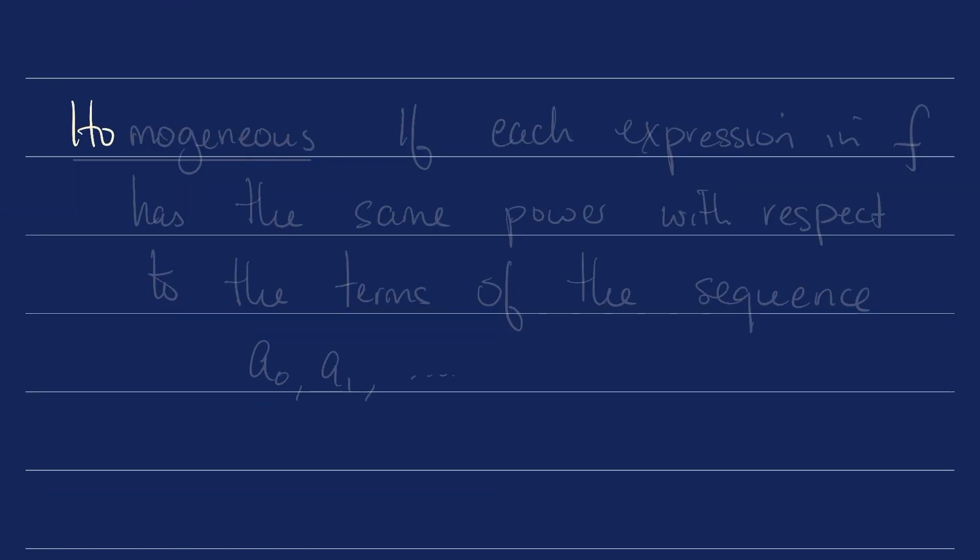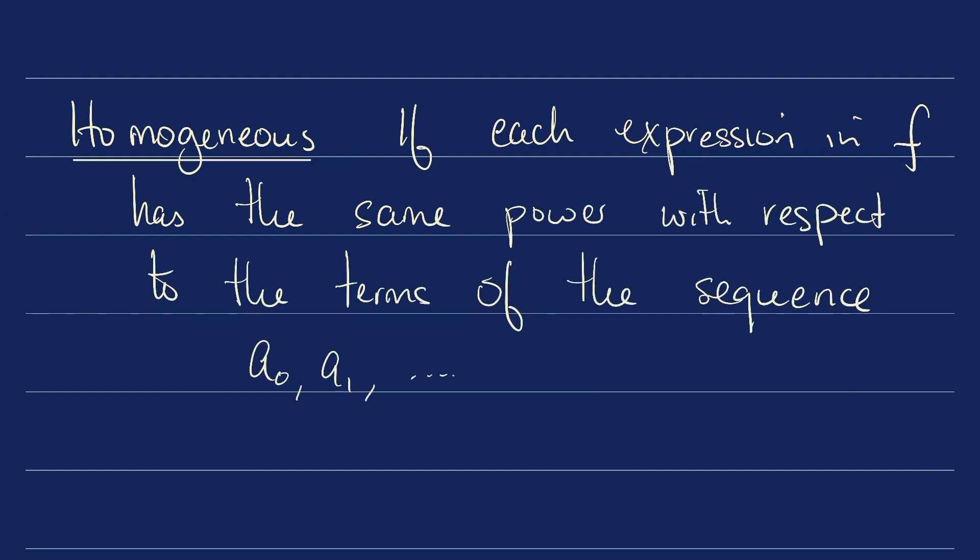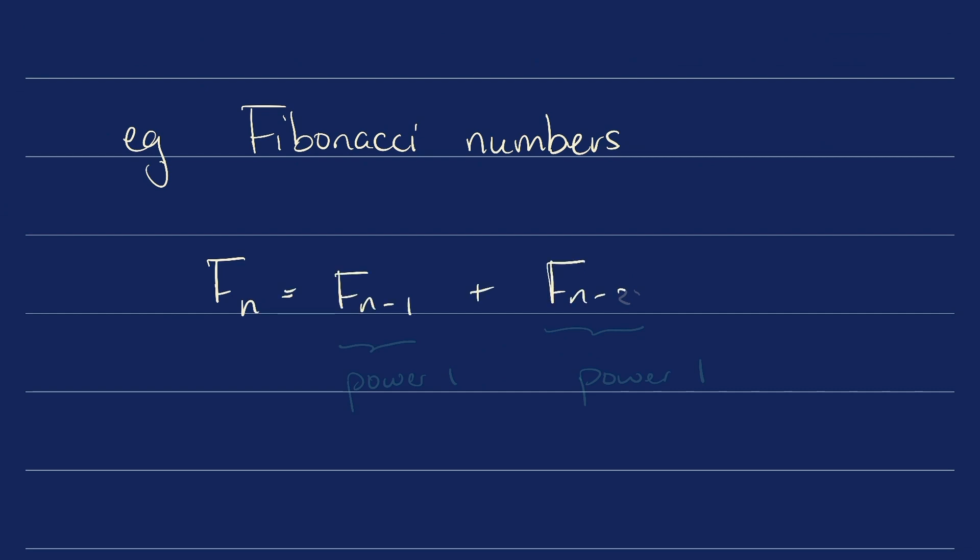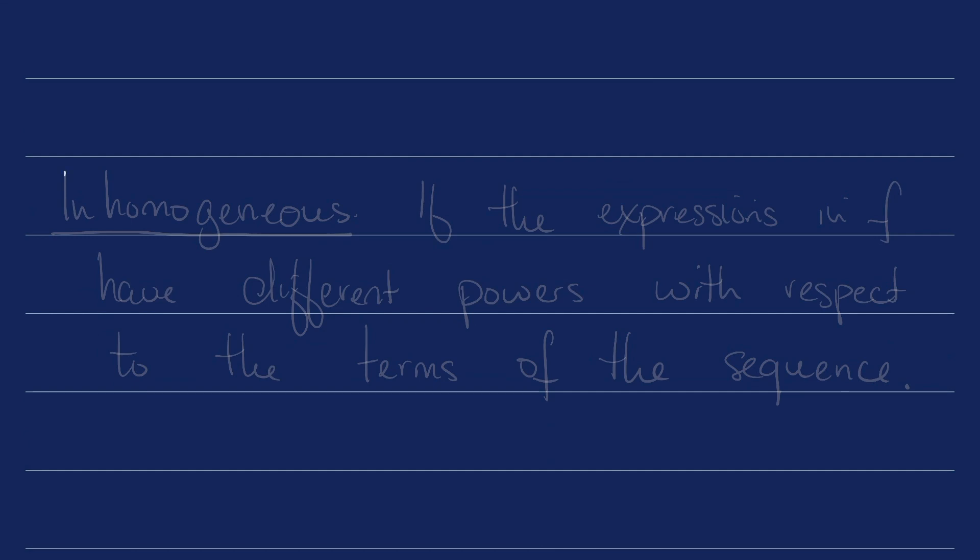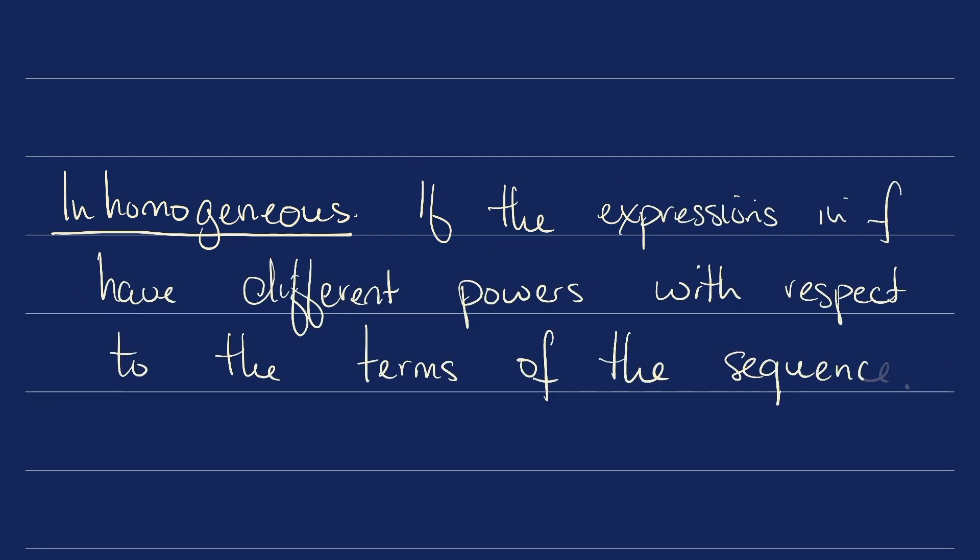A recurrence relation is called homogeneous if each expression that makes up f has the same power with respect to the terms of the sequence. For example, the Fibonacci numbers. A recurrence relation is called inhomogeneous if the expressions in the function f have different powers with respect to the terms of the sequence.